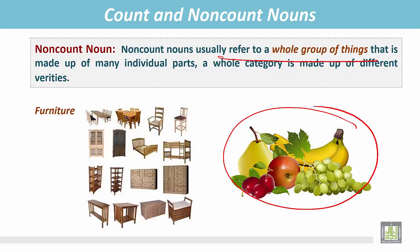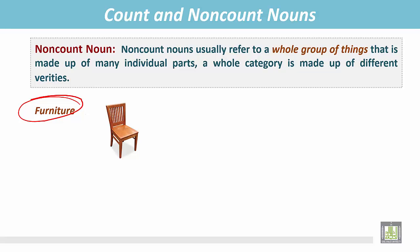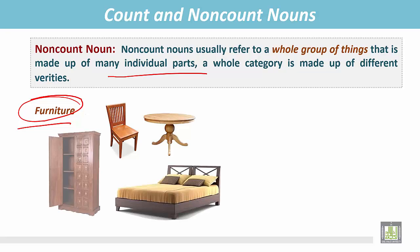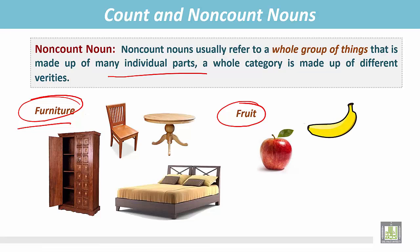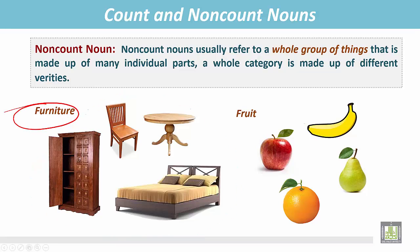In this picture we see different kinds of fruit: banana, grape, apple, banana, orange, pear. All these individual items make a whole group called 'fruit.' So all these individual fruit items are referring to the whole group of things, and that is fruit.